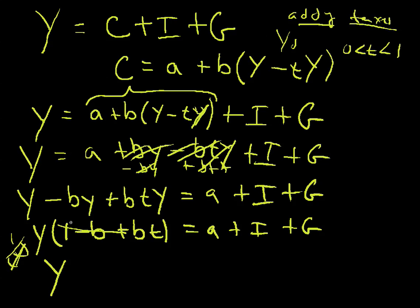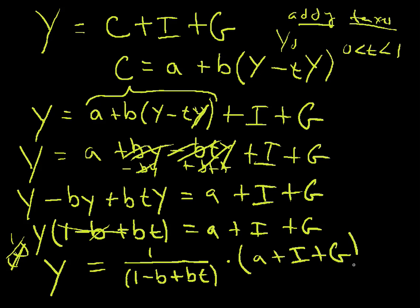And we now go to y equals 1 over 1 minus b plus bt. That's the tax multiplier when taxes are included times all of this stuff, a plus i plus g.